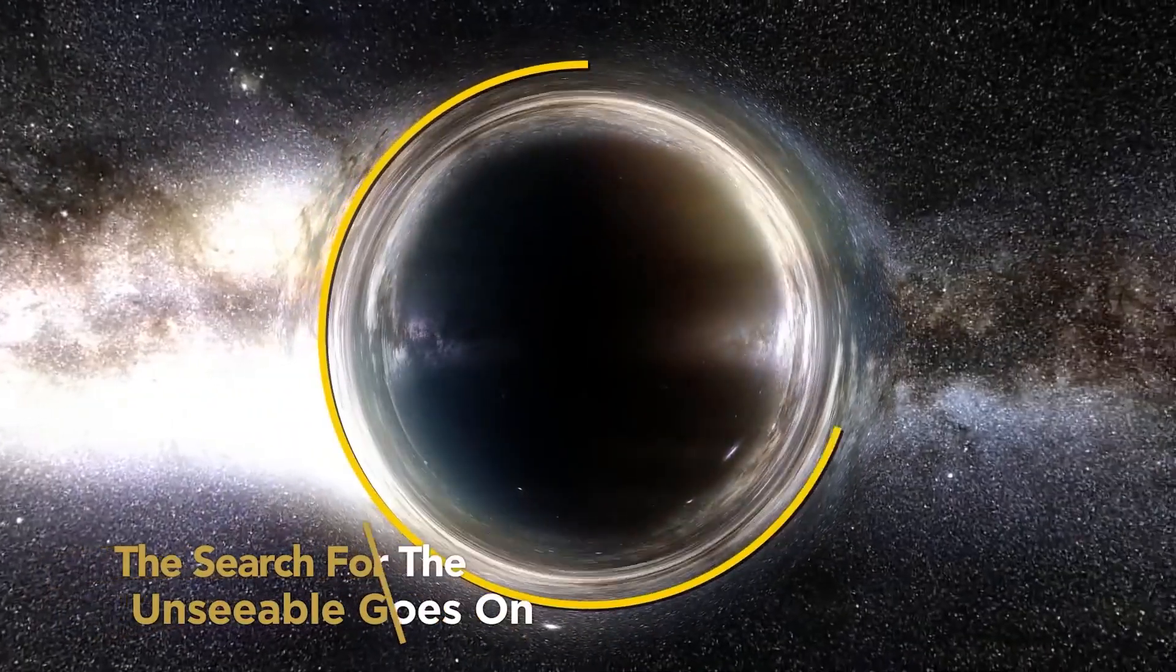They're not black holes, but they're still extraordinarily extreme objects. The gravity on the surface of a neutron star is still billions of times stronger than the gravity at the surface of the Earth. The search for the unseeable goes on.